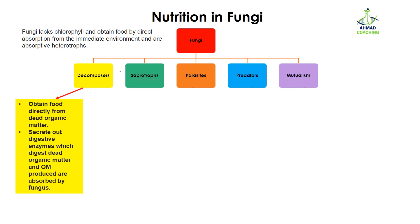First, let's talk about decomposers. Decomposers obtain their food directly from dead organic matter. They attack dead organic matter and secrete digestive enzymes. Those digestive enzymes digest the dead organic matter of dead bodies, and the organic material produced is then absorbed by the fungi.